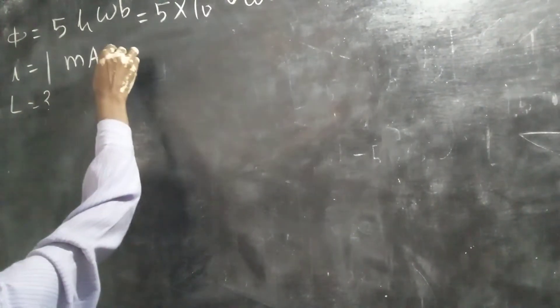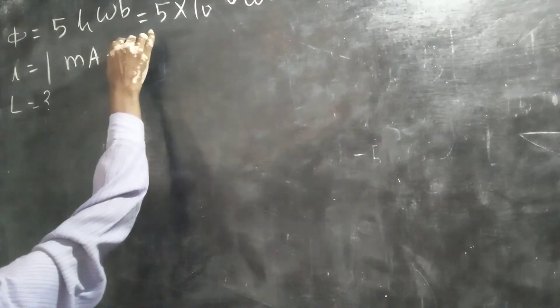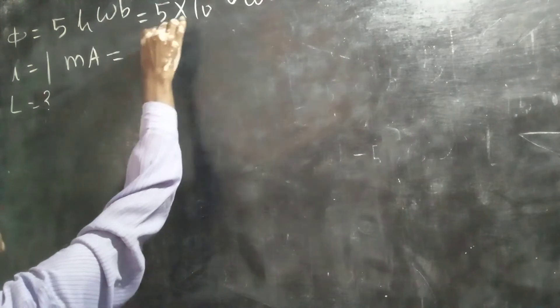Current is 1 milliampere, so change it to ampere. 1 milliampere equals 10 to the power minus 3 ampere.